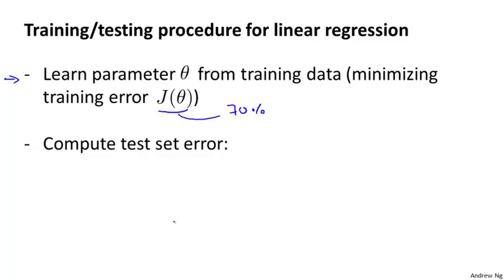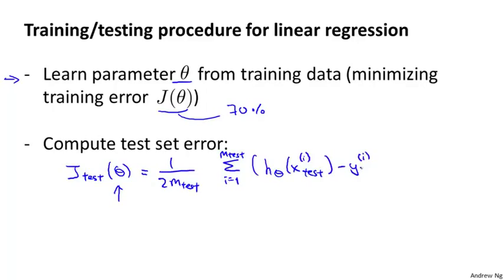And then you would compute the test error. And I'm going to denote the test error as j subscript test. And so what you do is you take your parameter theta that you've learned from the training set and plug it in here and compute your test set error, which I'm going to write as follows. So this is basically the average squared error as measured on your test set. It's pretty much what you'd expect.